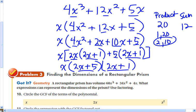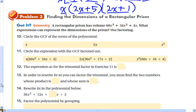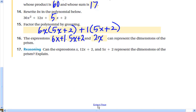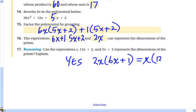So those are our three dimensions, our length, our width, and our height. Number 17 says, can the expressions x, 12x + 2, and 5x + 2 represent the dimensions of the prism? Explain. I believe they could, yes. If we took these two factors, 2x and 6x + 1, they would be exactly the same as x times 12x + 2. Both of them equal 12x² + 2x. So that would be another option for the dimensions.